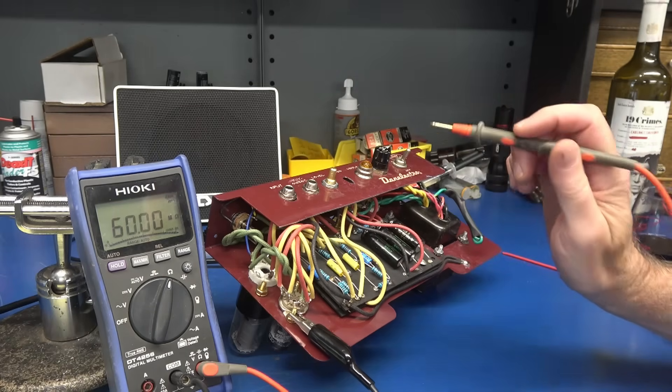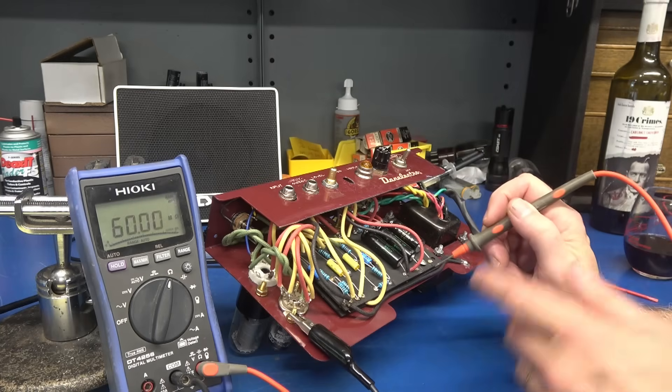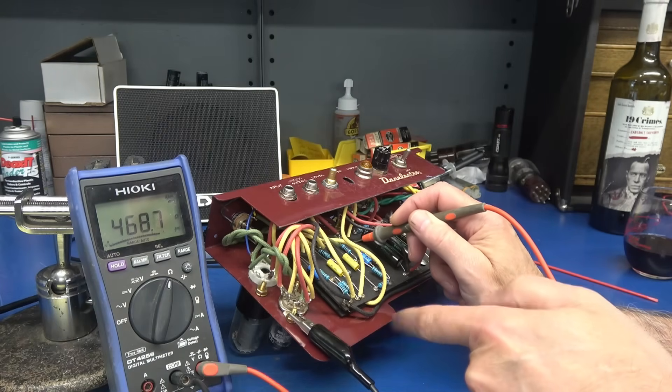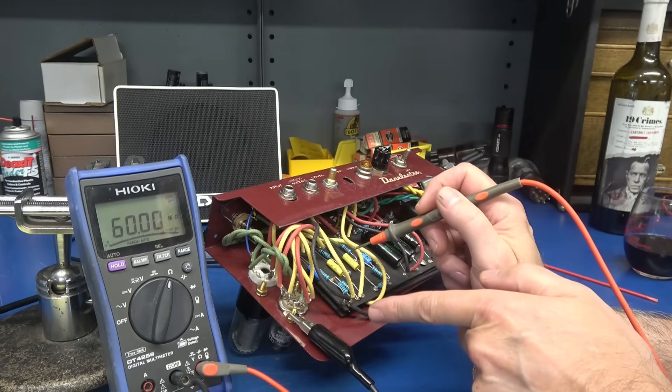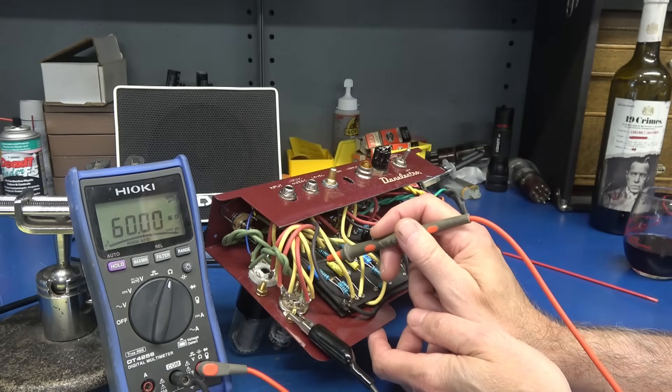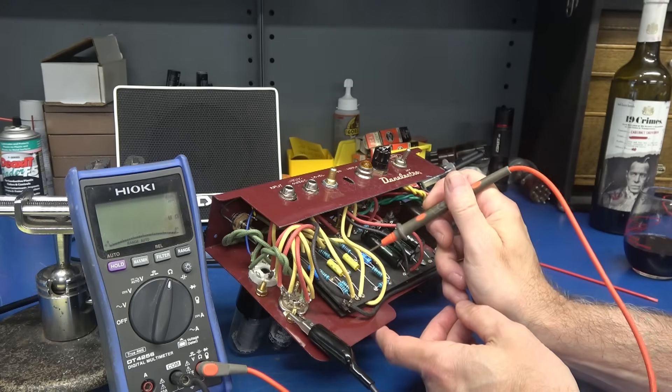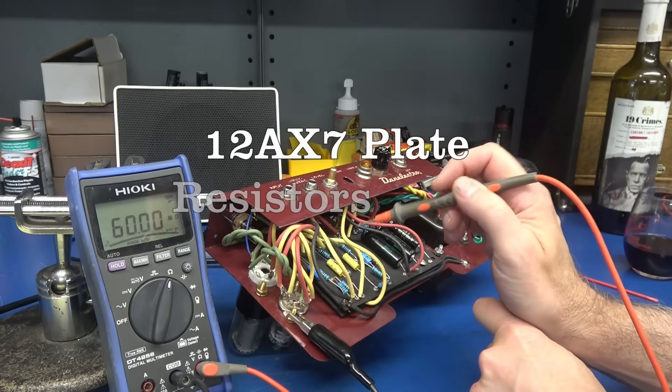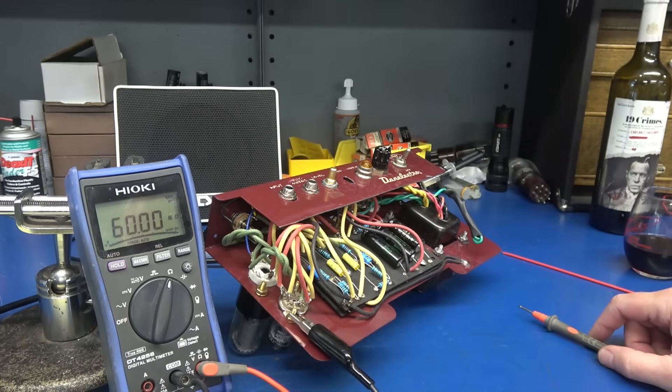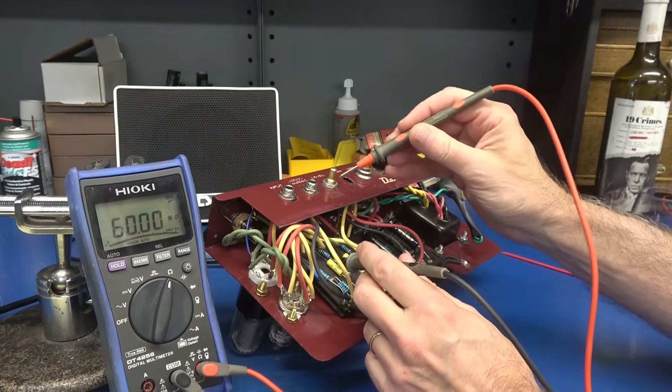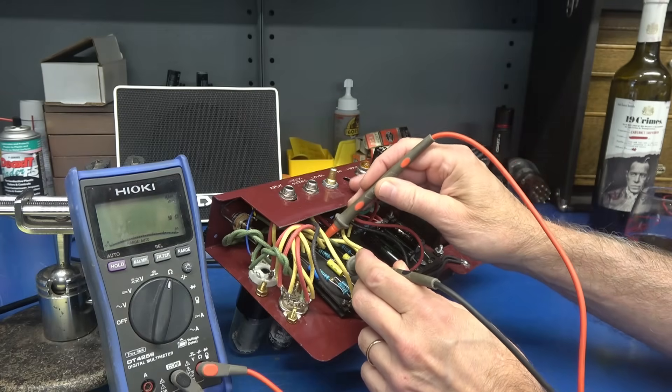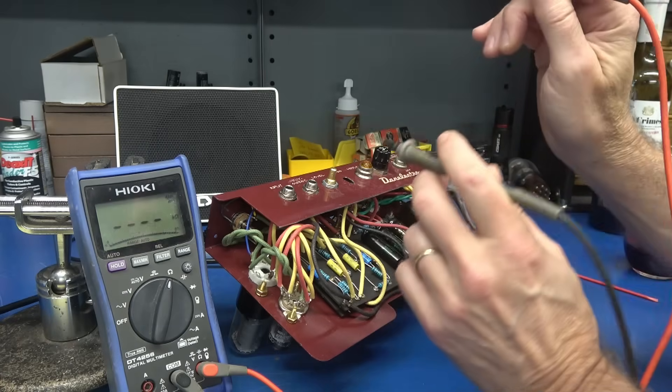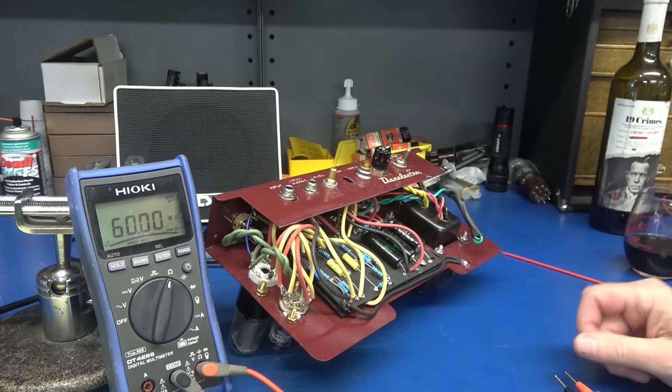Here we go. Ground zero. We're going to verify the resistances of all these core components in the 5F1. I'll start with the cathode resistor that is going to the 6V6. So we're looking for 470 ohms to ground. We got it. Then we have the two cathode resistors going to the 12AX7. They're 1.5K. And there's one of them. And there's the other. So it appears as though those are fine.